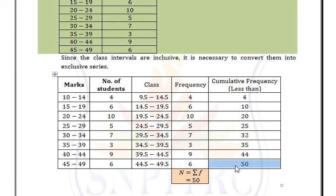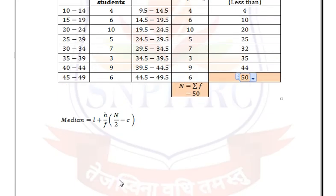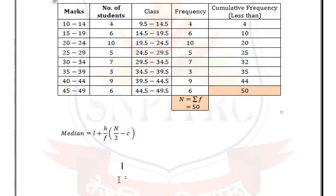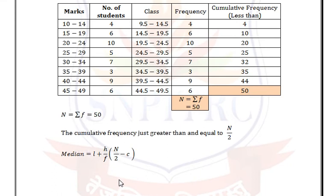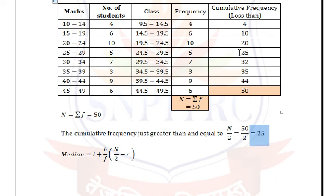The last cumulative frequency value is capital N = 50. Find the cumulative frequency just greater than or equal to N/2 = 50/2 = 25. The cumulative frequency equal to 25 is 25 itself.